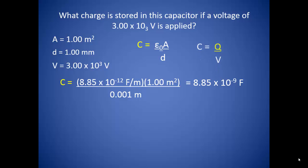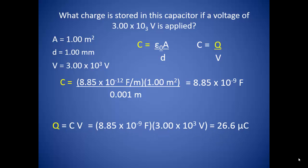What charge is stored in this capacitor if a voltage of 3.0 times 10 to the third volts is applied? Capacitance is also the amount of charge divided by the voltage, so we can rearrange that equation to solve for the charge. Plugging in what we know and remembering that a farad is a coulomb per volt, we find 2.66 times 10 to the fifth coulombs, or 26.6 microcoulombs. Remember when we found the amount of charge in a static discharge? It really wasn't much larger than this, so this particular capacitor can't hold much in the way of charge.